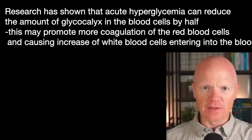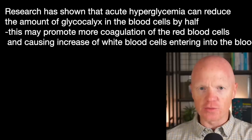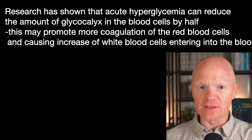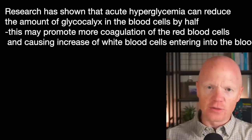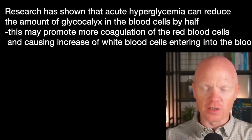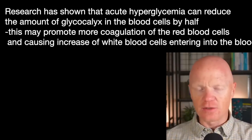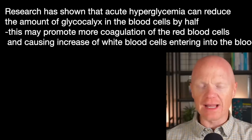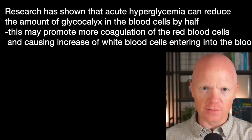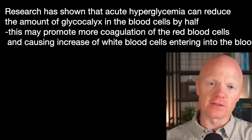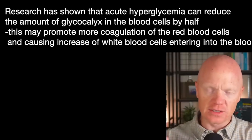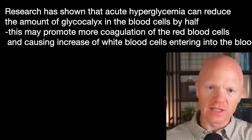Acute hyperglycemia, for instance, has been shown in healthy adults to reduce the systemic endothelial glycocalyx volume by roughly half. So if you take the glycocalyx of a healthy individual and induce hyperglycemia, it will have shrunk by about half. This can then lead to a state more likely to promote coagulation, as well as infiltration of white blood cells or immune cells into the walls of the endothelium.